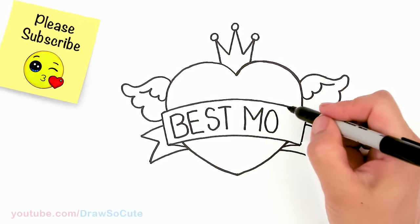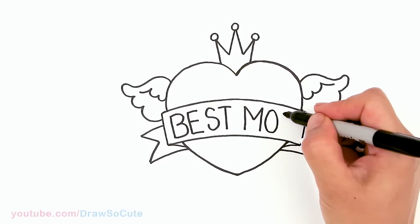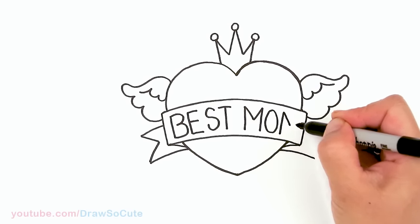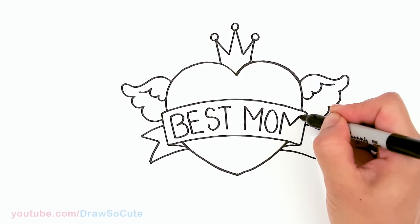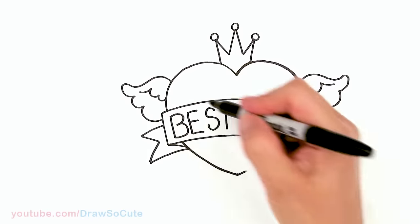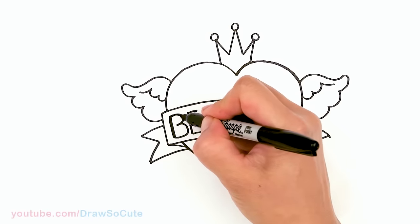So when you're doing letters, when you come to the end, if you're seeing that you have very little space left then your letters just become thinner. If you have a lot of space left then your letters become wider. So it really doesn't matter. Okay so we have best mom. And now I'm gonna come in here and just go ahead and thicken everything up.